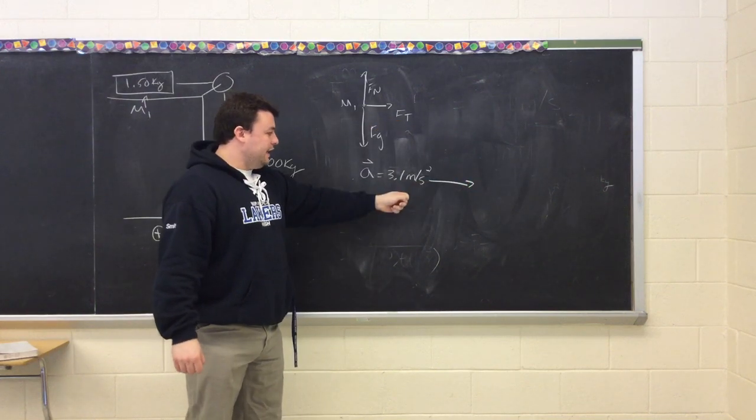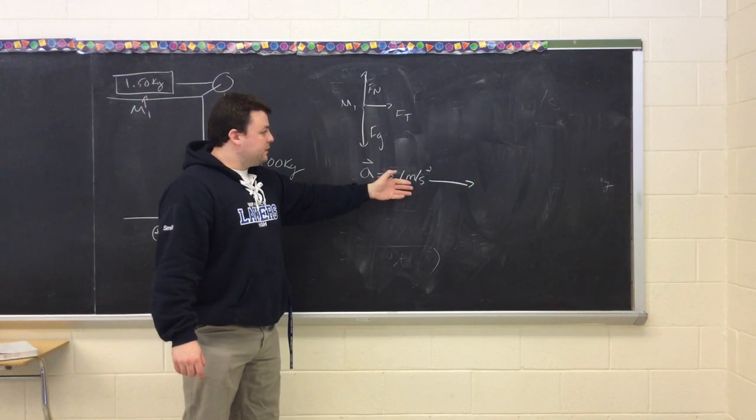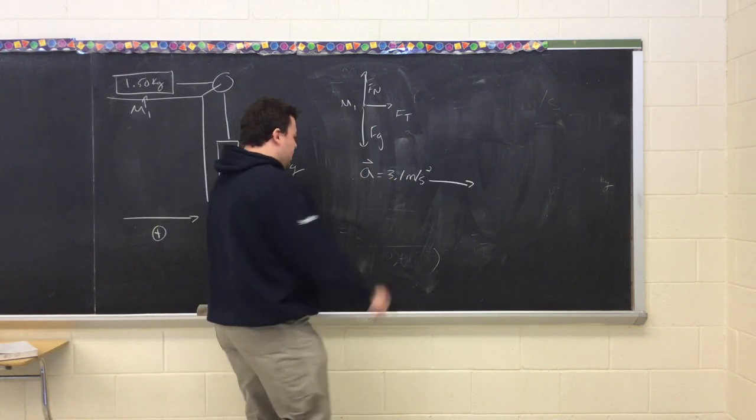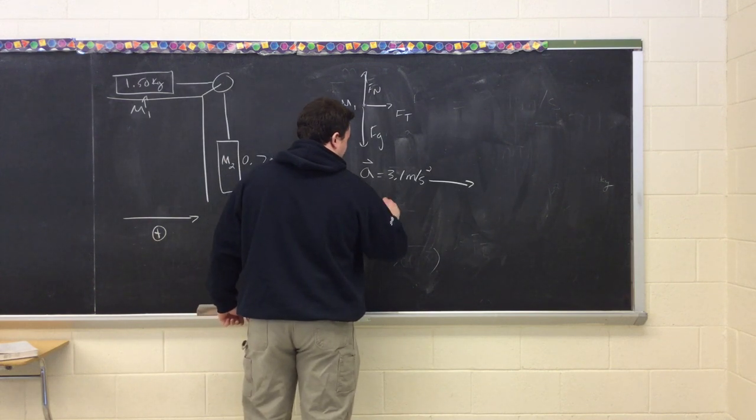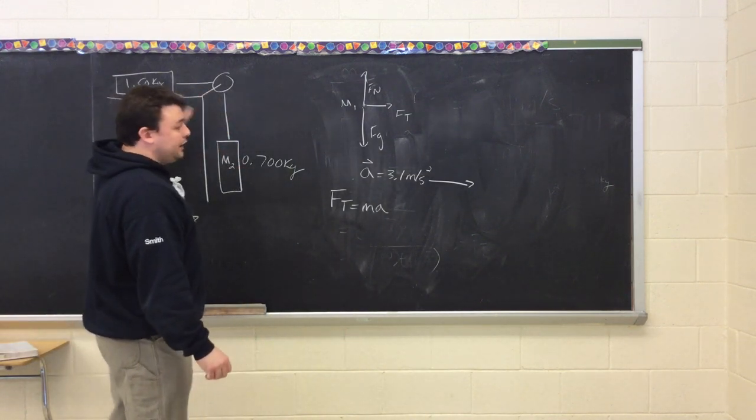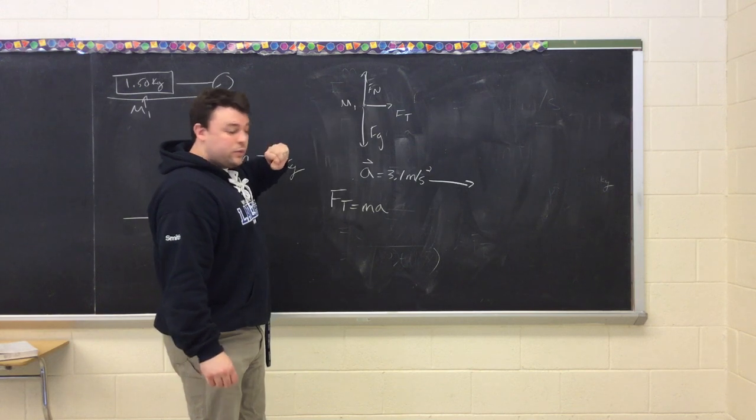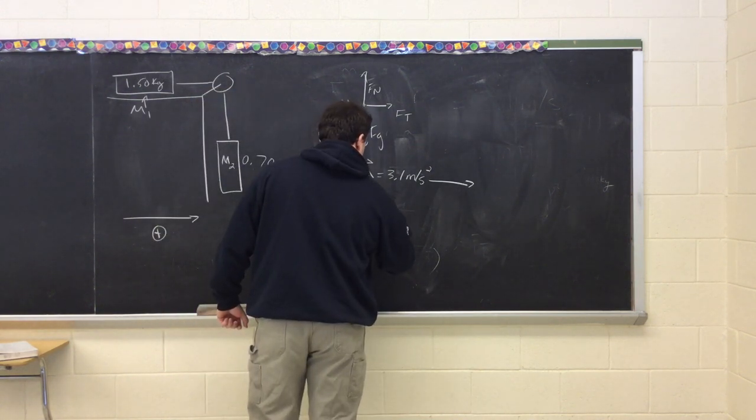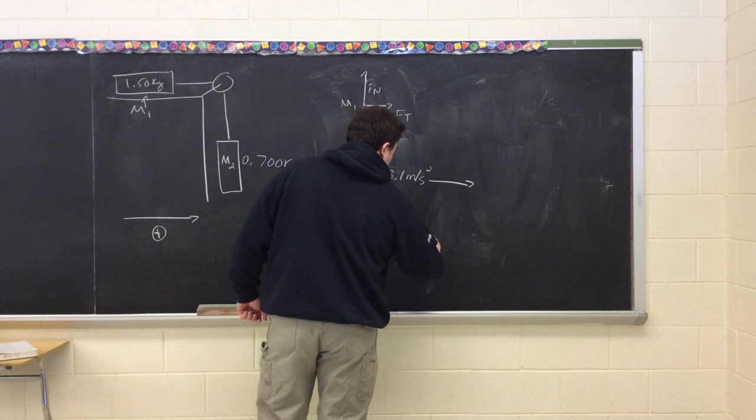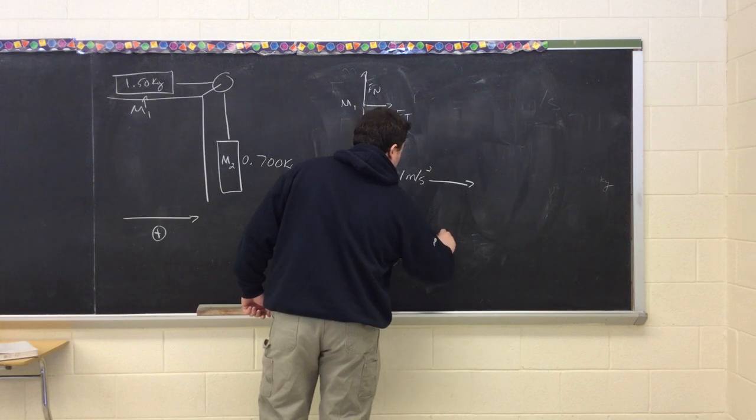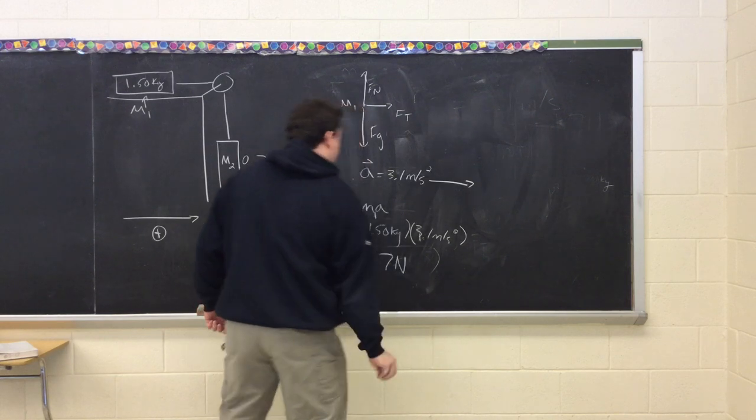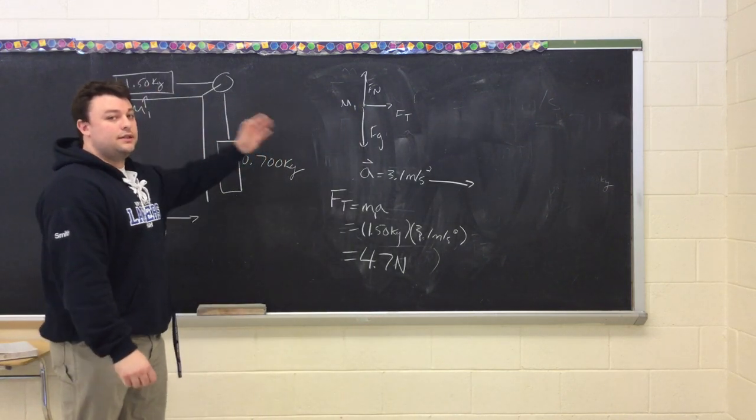The force of tension is equal to this acceleration in terms of the fact that we would use this, because it's in the same direction, to find our force tension. So force tension equals m times a, but this is the mass of the block here, the mass of m1, which is 1.5. So the tension equals 4.7 newtons in this string.